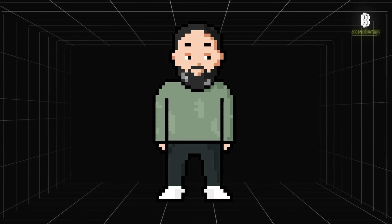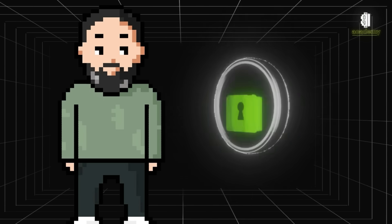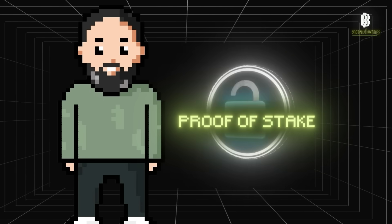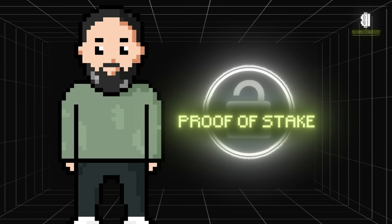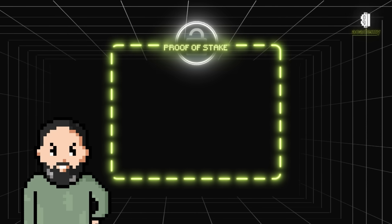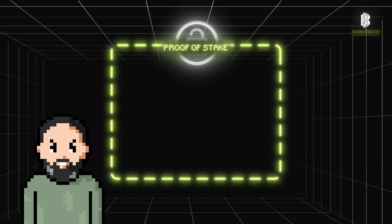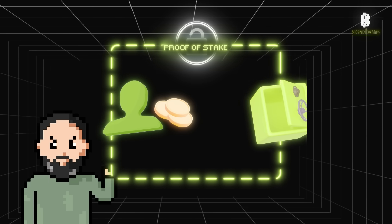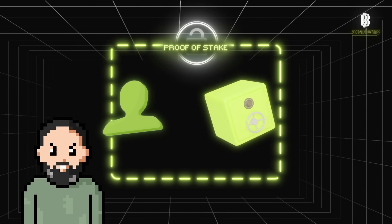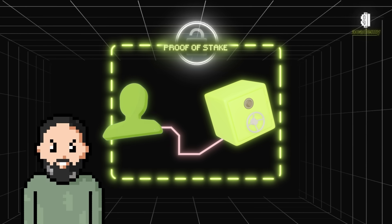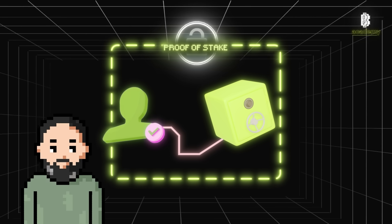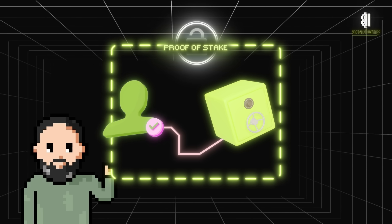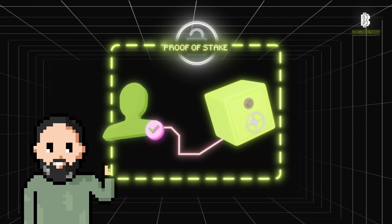When staking was first introduced in the crypto world, it was all about securing a network through a method called proof of stake. This concept was born with the launch of PeerCoin back in 2012. In simple terms, this original form of staking involved users or validators locking up a certain amount of tokens.